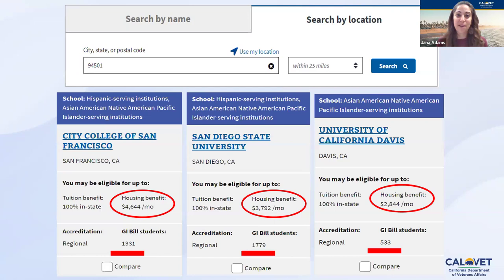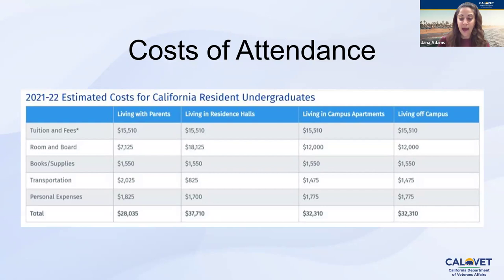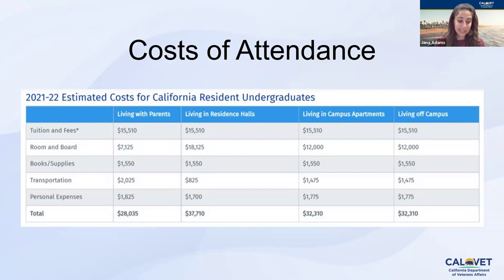We have a visual aid to show you just how expensive college is — and it is really expensive. That's why the tuition fee waiver for dependents is so great, and why utilizing your GI Bill properly is so important.